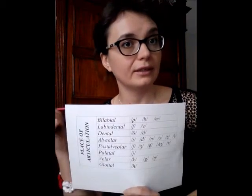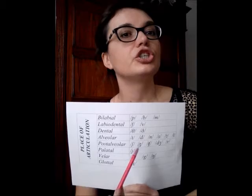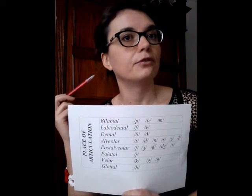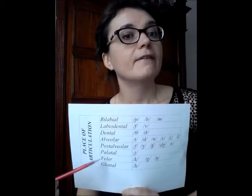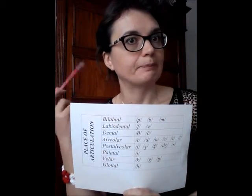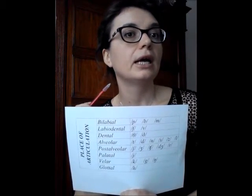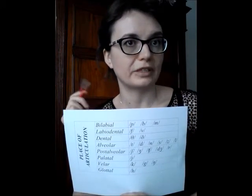Postalveolar: the tongue tip moves towards the region just behind the alveolar ridge — sh, zh, ch. Palatal: as we have said, the front part of the tongue moves towards the hard palate. Velar: the tongue back moves towards the velum, and we have K, G, and NG. And finally the glottal sound, where the vocal folds move towards each other.